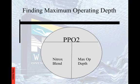The magic wheel has three components. It's basically a circle — it looks like a wheel — and we're going to draw a T in it. When figuring out maximum operating depth, some things are going to be constants. The top part is always going to be our partial pressure of O2. On the left-hand side, that's going to be the Nitrox blend. And on the right-hand side, it's going to be maximum operating depth.